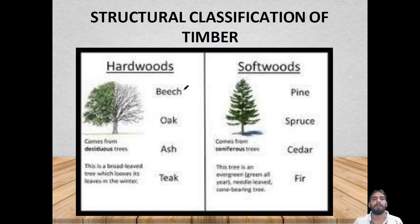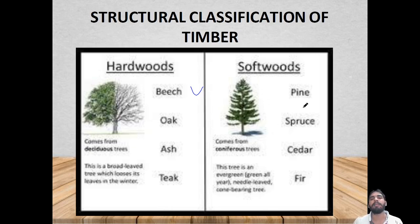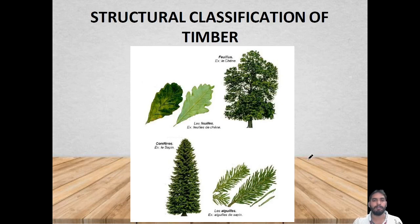Examples of hardwood trees include beech, oak, ash, and teak. Examples of softwood trees include pine, spruce, cedar, and fir.